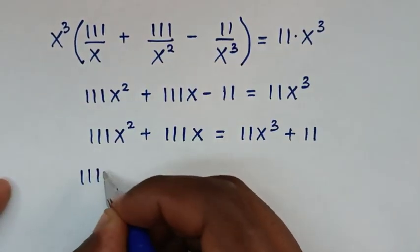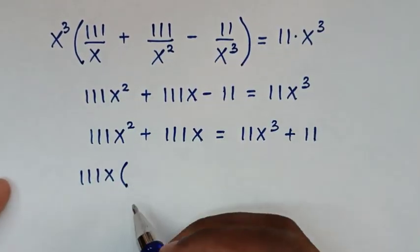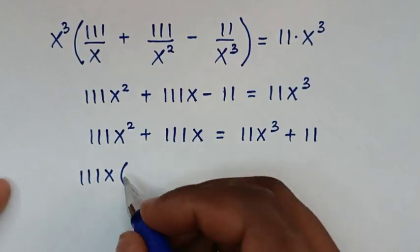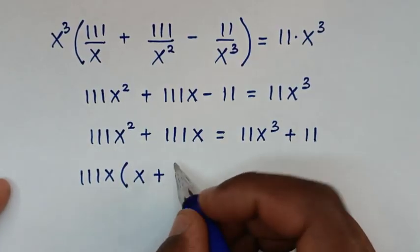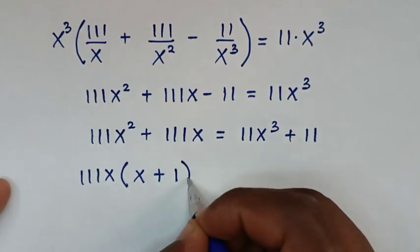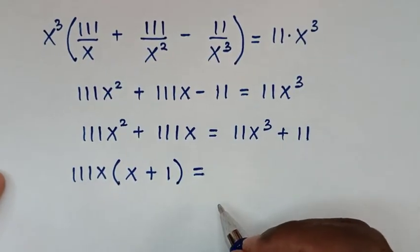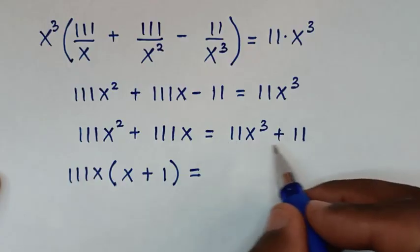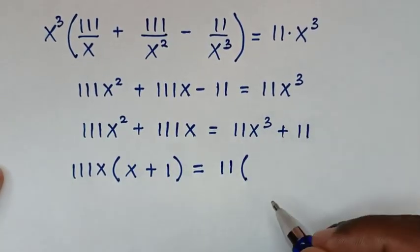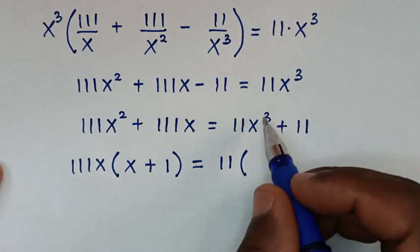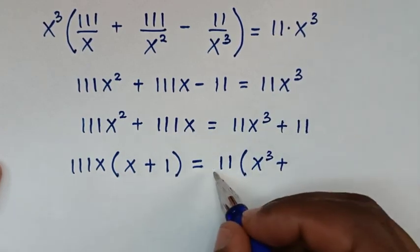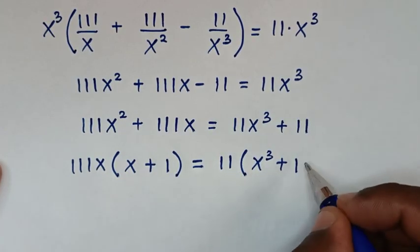From this side, 111x is common, so we'll factor 111x out of the bracket. This gives 111x times (x plus 1) on the left. On the right side, 11x is common, giving 11x times (x power 3 plus 1) — where 11 divided by 11 is 1 — so the right side is 11x times (x power 3 plus 1).